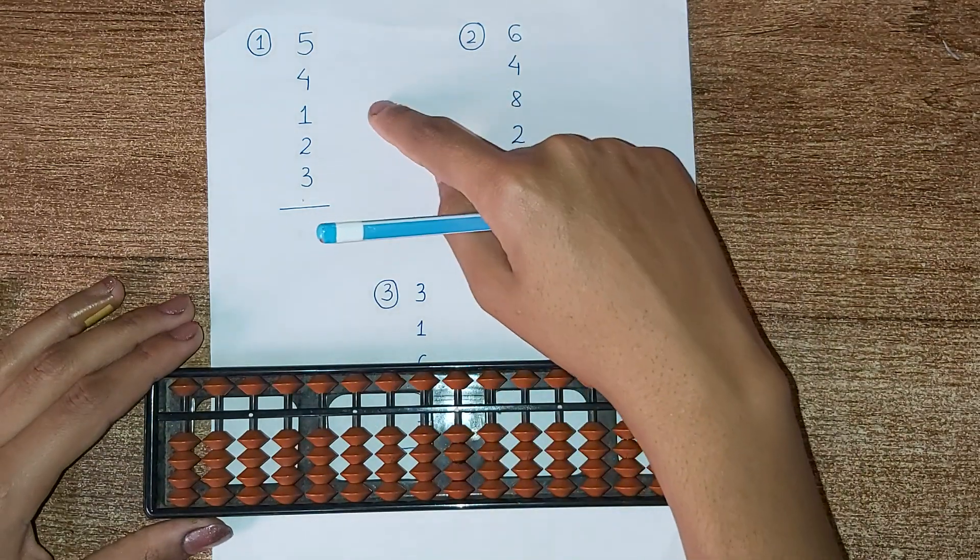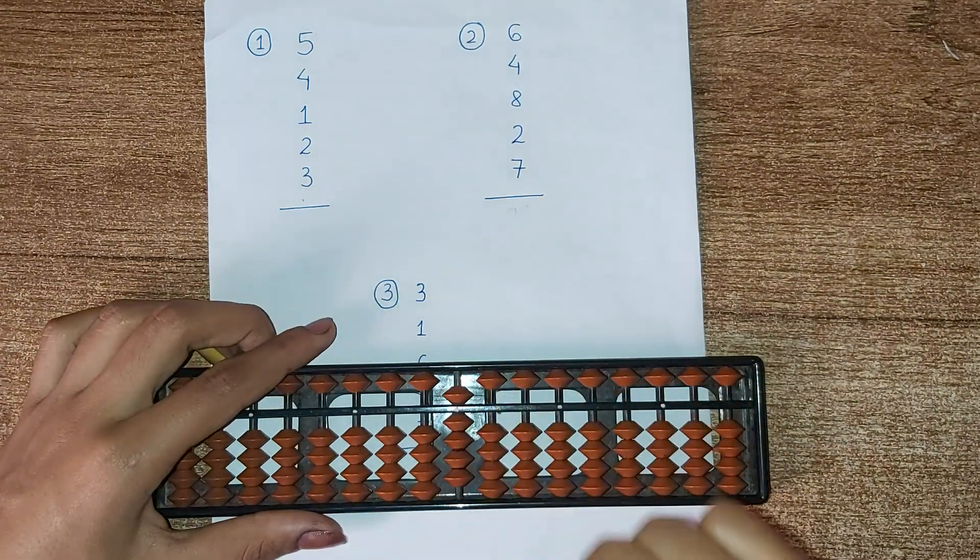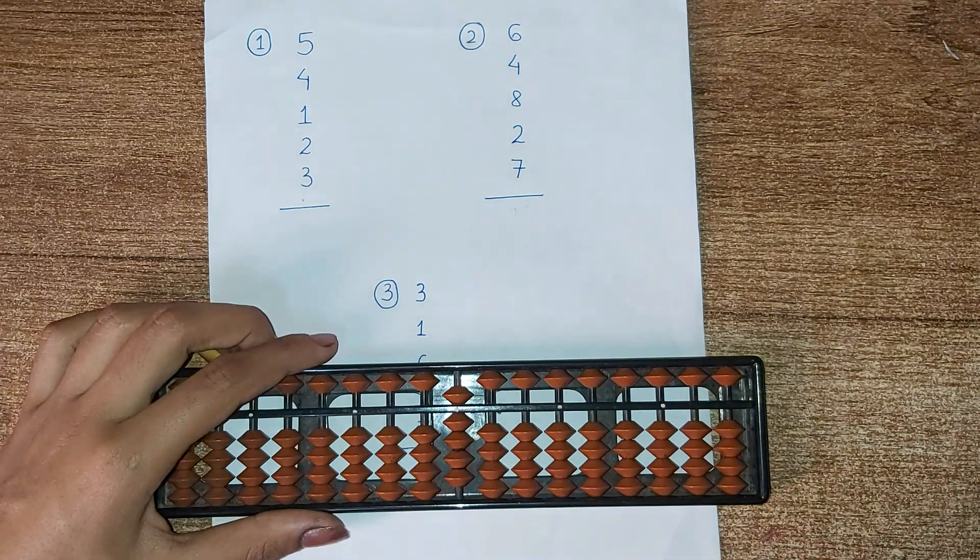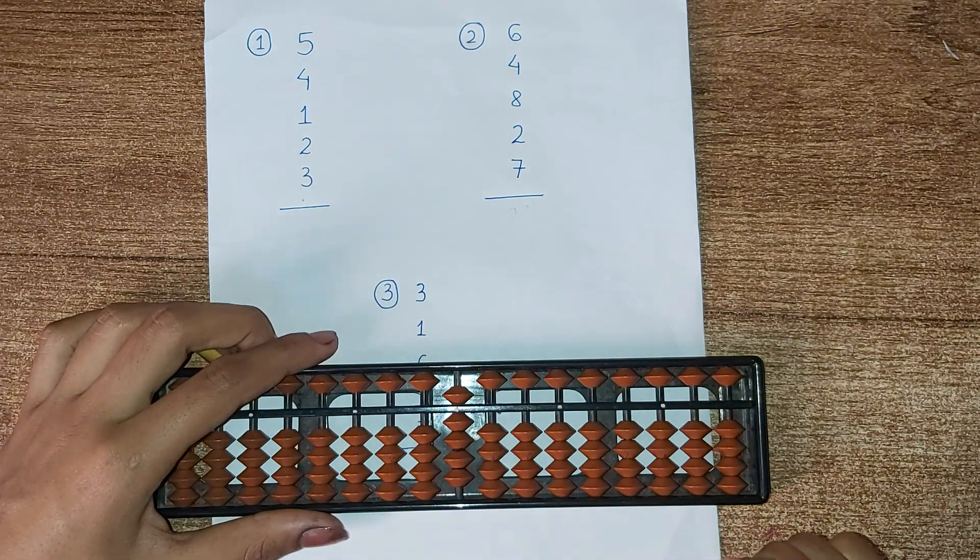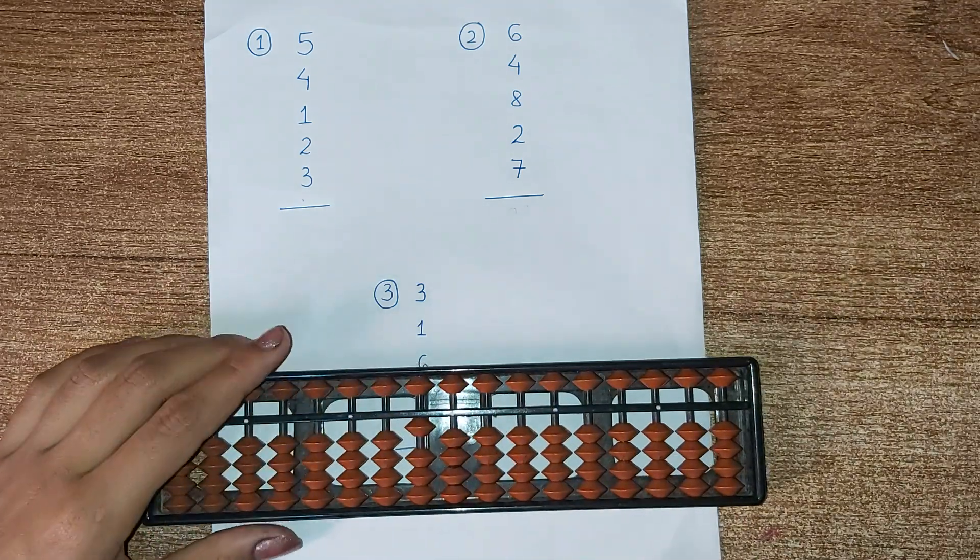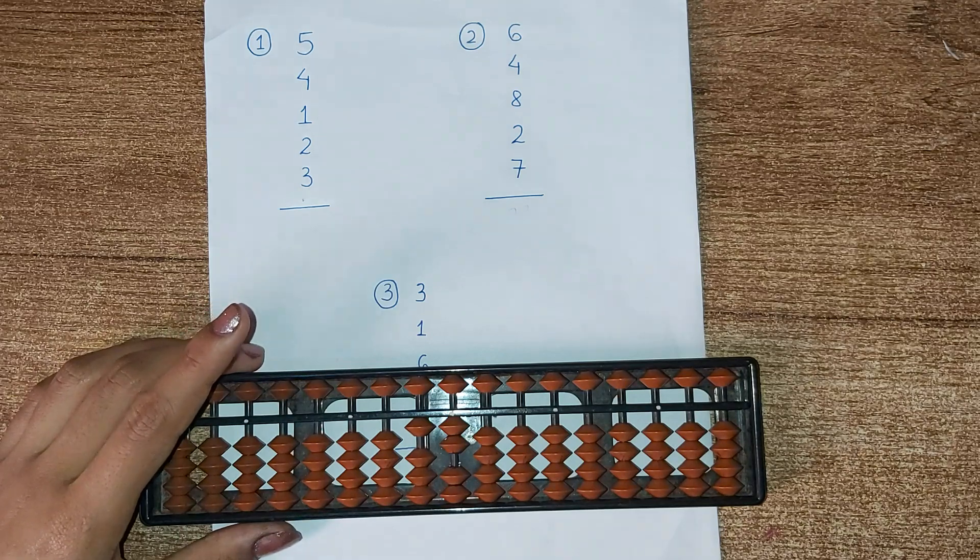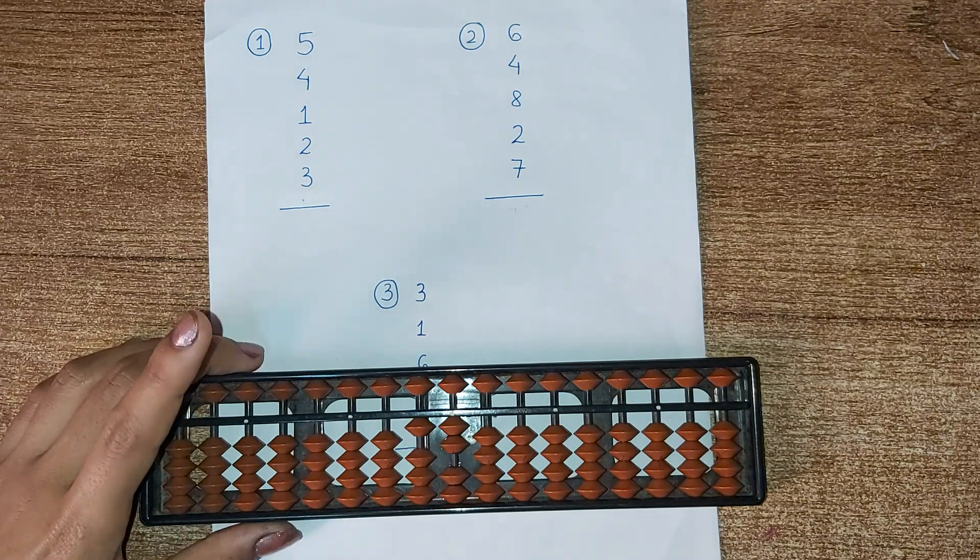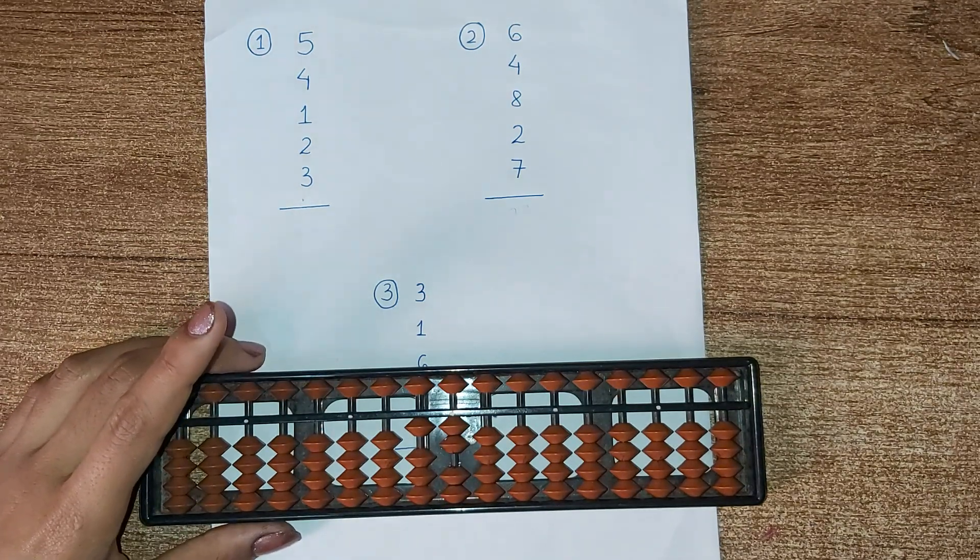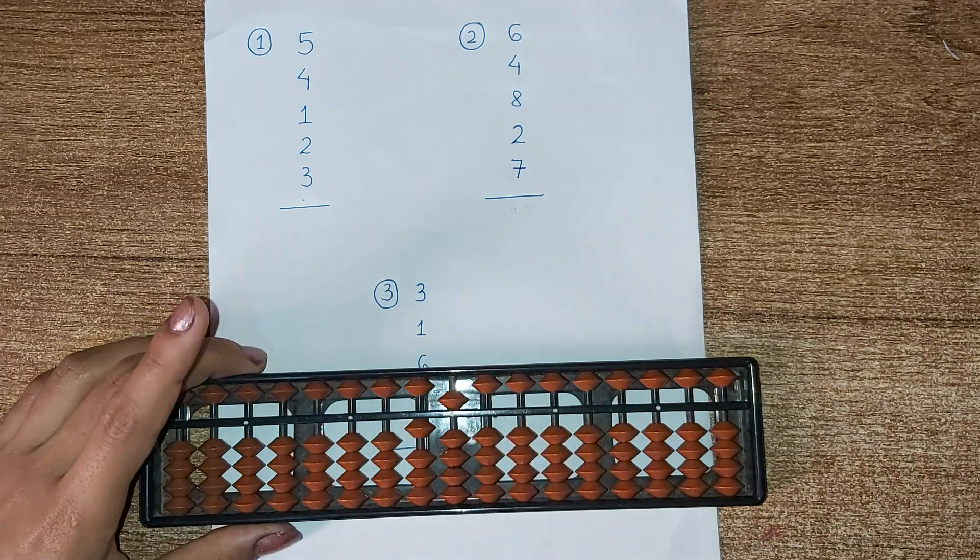First number 1, 5, then 4, 1. We can't do 1 because the beads are not available so we use the formula minus 9 plus 10. Now 2 we can do directly. 3, we can't add 3 because there are no beads available so we use the small friend formula for 3 that is minus 2 and plus 5. So we get the answer 15.